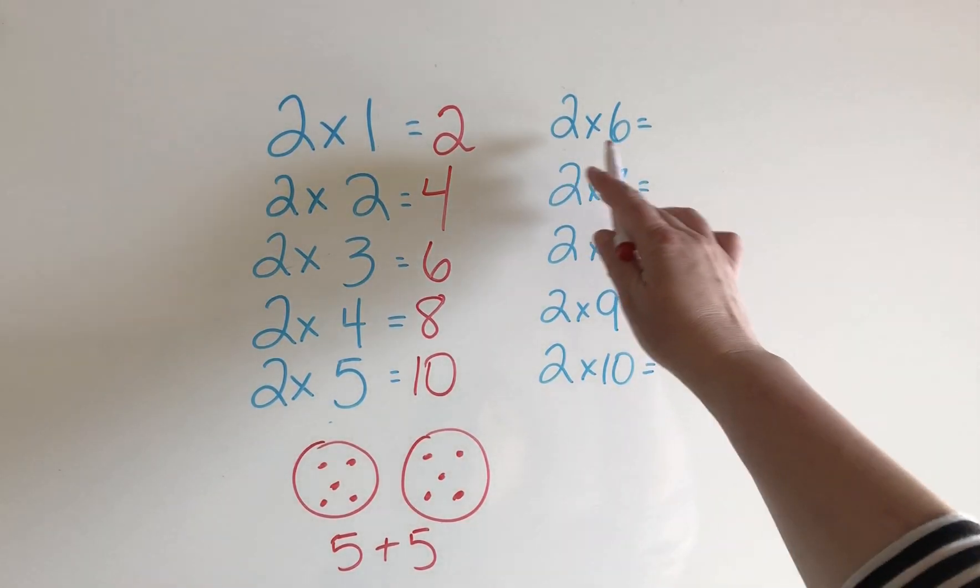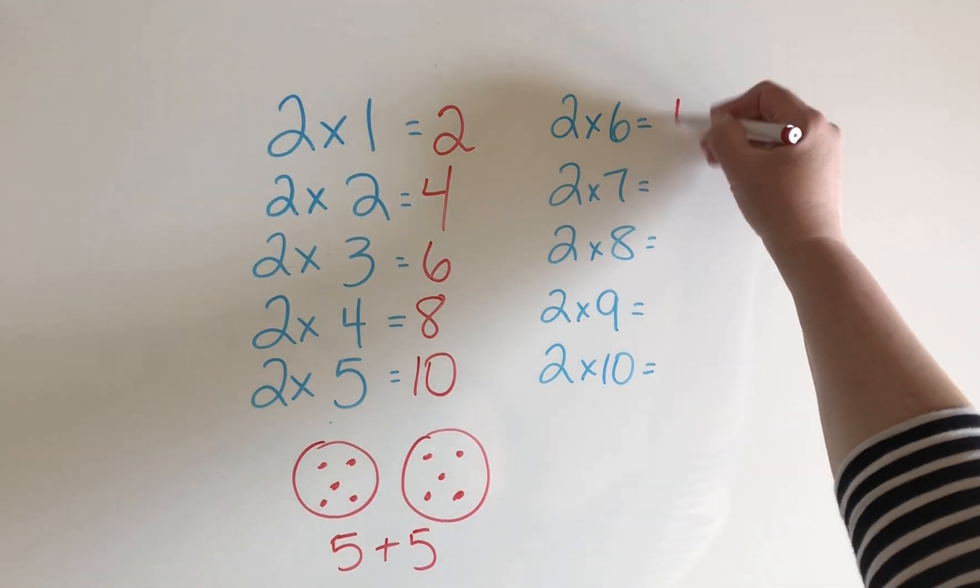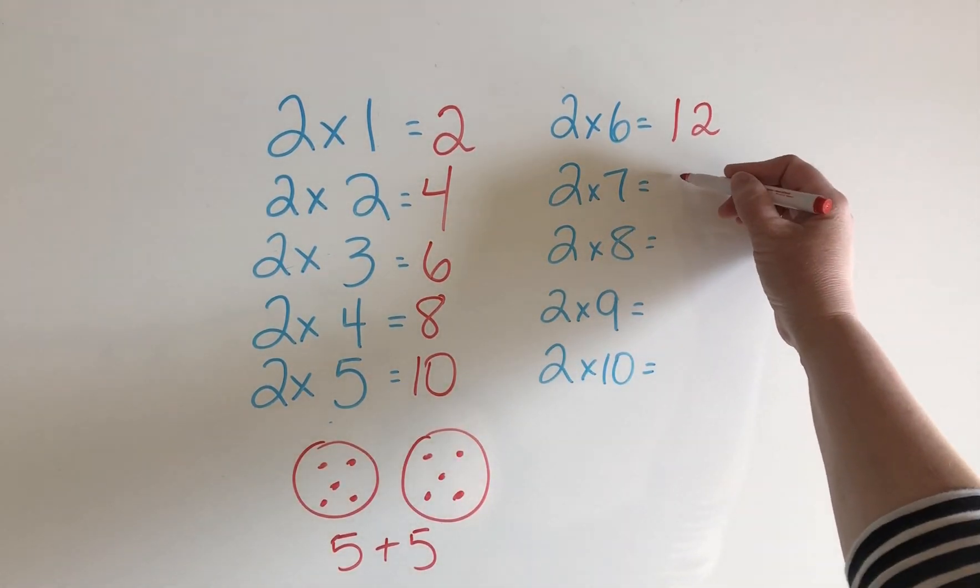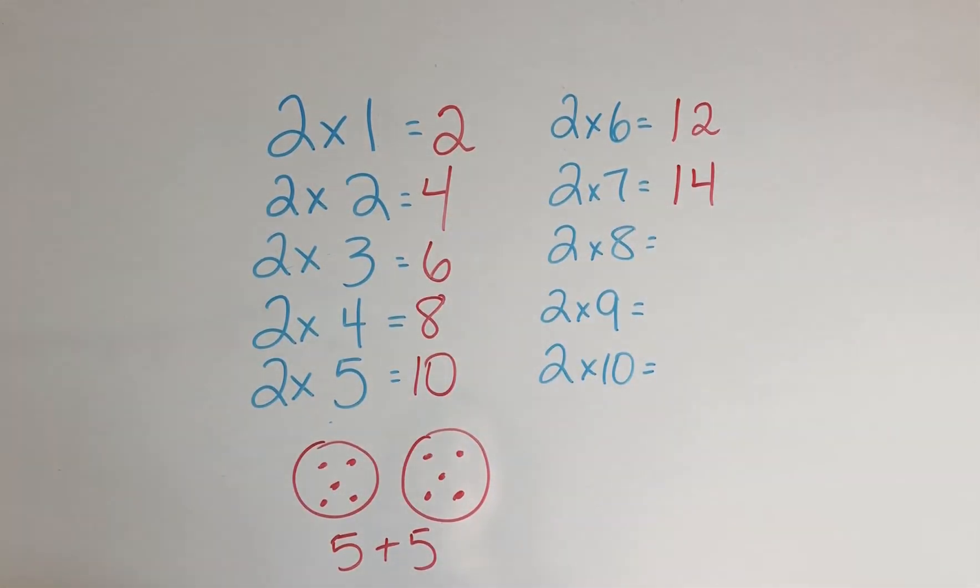Let's keep going over here. 2 times 6. What's the double of 6? 12. 2 times 7. The double of 7 is 14. 2 times 8. What's the double of 8?